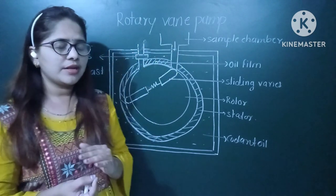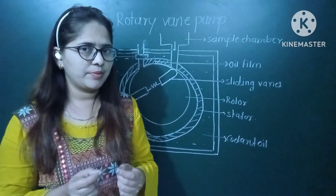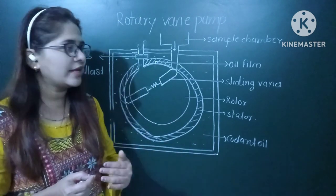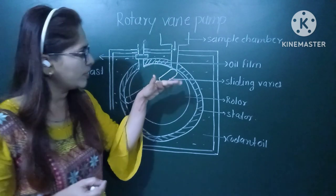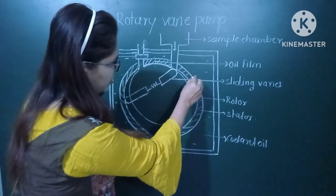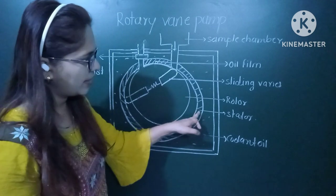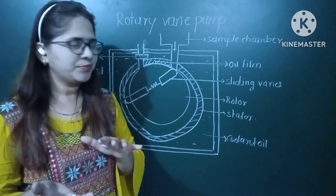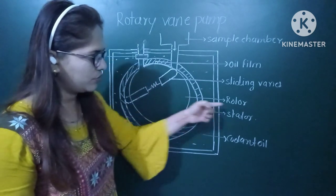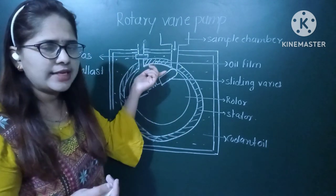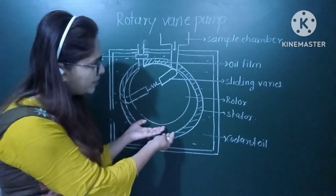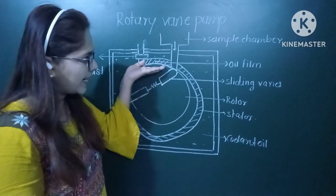This rotary vane pump comes under the positive displacement pump. In the positive displacement pump, we remove the air molecules mechanically from the sample chamber. This rotary vane pump consists of a stationary part called the stator, which remains stationary. To that stator, one rotating part called the rotor has been connected eccentrically. Eccentrically means this rotor is not present exactly at the center of the stator — it is placed eccentrically.